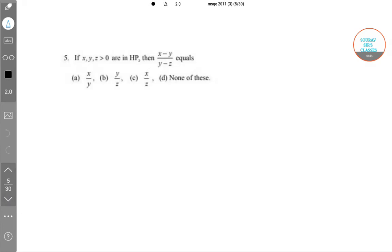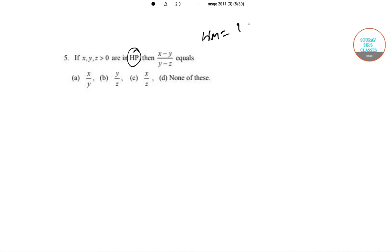Now in the next question they have given a harmonic progression. The harmonic mean formula we know: for 2 it is 2xy/(x+y), for 3 it is 3xyz/(xy+yz+zx), and in that way.